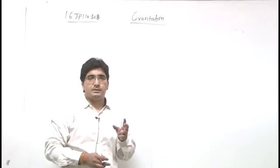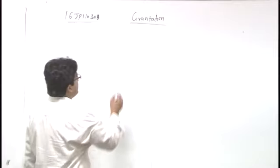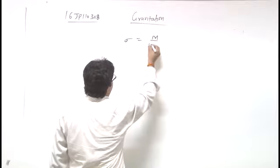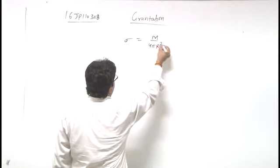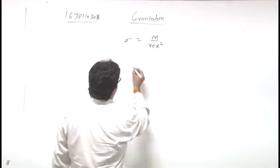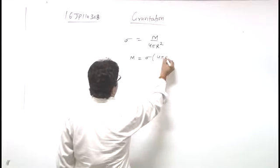Here two spheres are given. Their surface mass density is same. Surface mass density means sigma, sigma equals mass upon 4 pi r square. This is same for each sphere, m by 4 pi r square. So here m equals sigma into 4 pi r square.